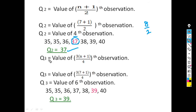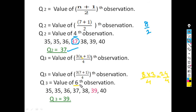Q3 = value of 3×(7+1)/4 = value of 3×8/4 = value of 24/4 = value of 6th observation. The 6th observation in the arranged series is 39. Therefore, Q3 = 39.